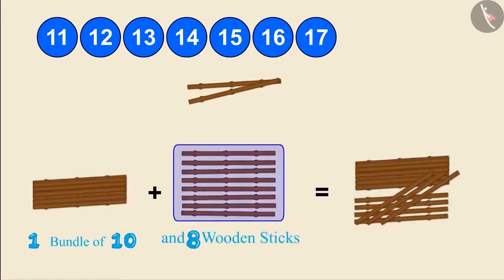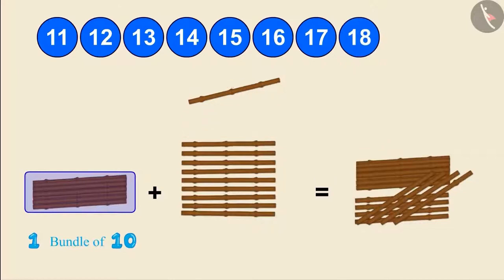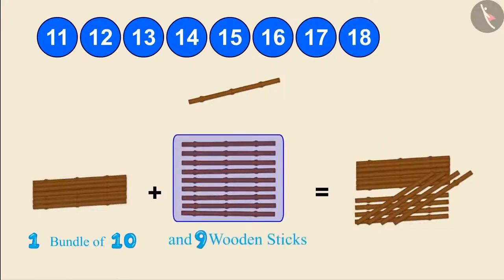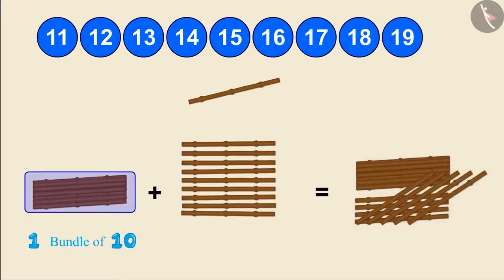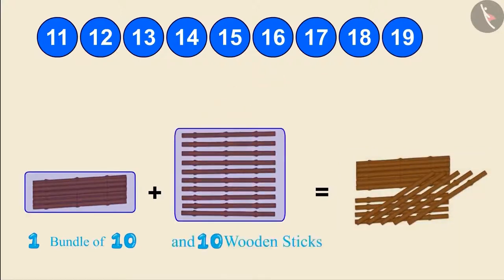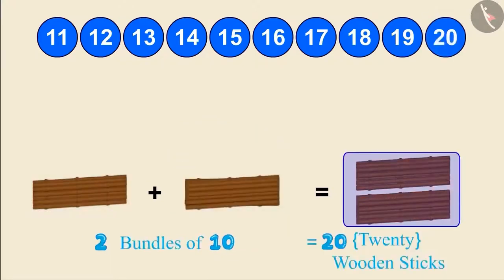One bundle of 10 and 7 wooden sticks make 17 wooden sticks. One bundle of 10 and 8 wooden sticks make 18 wooden sticks. One bundle of 10 and 9 wooden sticks make 19 wooden sticks. And one bundle of 10 and 10 more wooden sticks make 2 bundles of 10, that is 20 wooden sticks.